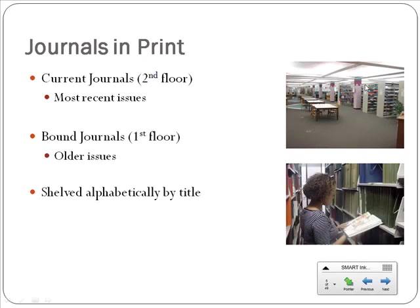Likewise, there are times when you may need an article from our journals in our print collection. In our physical library, we have journals on the second floor and the first floor, depending on how old the print journals are. Whenever you need an article, you don't have to drive all the way up here. You can just use Library Express, and Access Services will pull the journal, make a PDF of the article, and make it available to you that way.